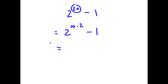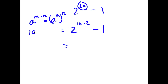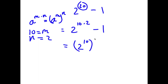If I have something in the form a to the power of m times n, this is equal to a to the power of m to the power of n. So 2 to the power of 10 times 2 — we can think of 10 as m and 2 as n — becomes 2 to the power of 10, to the power of 2, minus 1.